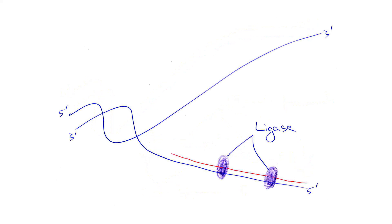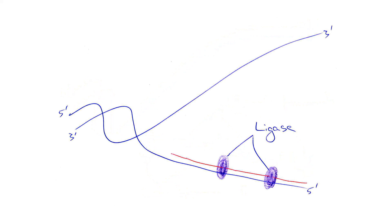Ligase then joins the nucleotides of each parent strand with its complementary daughter strand, resulting in two double-stranded DNA molecules. Each of the two DNA strands is one half parent and one half daughter strand. Because each has one original and one newly synthesized strand, DNA replication is referred to as being semi-conservative.